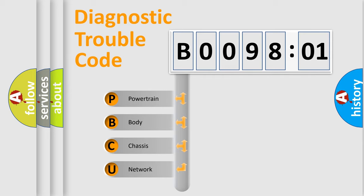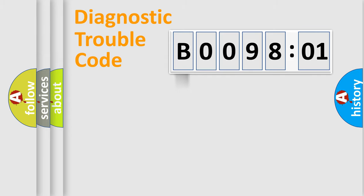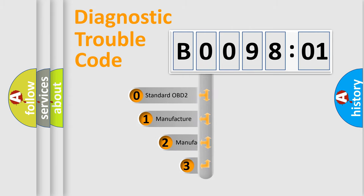We divide the electrical system of the automobile into four basic units: Powertrain, Body, Chassis, and Network. This distribution is defined in the first character of the code.